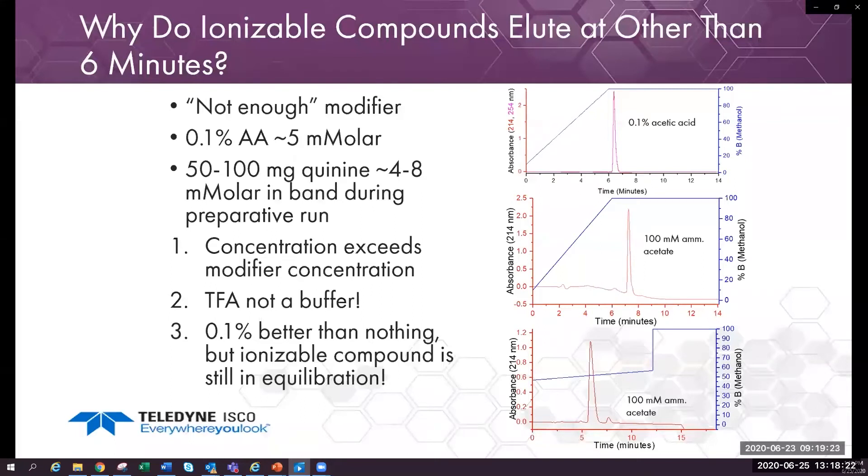Again, note the change in the scouting gradient and the modifier change. The previous run was 30 to 40% B. This run is 45 to 55% B solvent, and this is also reflected in the different retention times observed in the scouting runs.